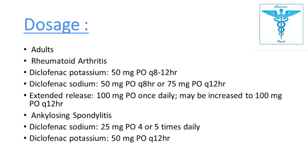Regarding dosage for rheumatoid arthritis, the dose of both sodium and potassium is the same: 50 mg orally every 8 to 12 hours. For 75 mg Diclofenac sodium, the dose is every 12 hours. In extended release, it may be 100 mg daily, or increased to 100 mg every 12 hours.